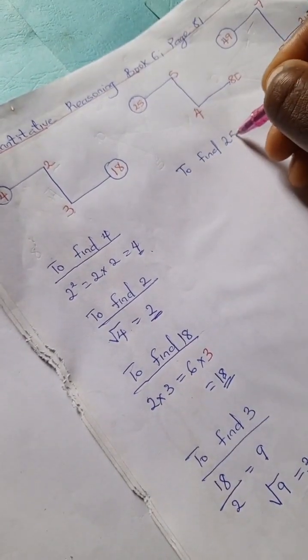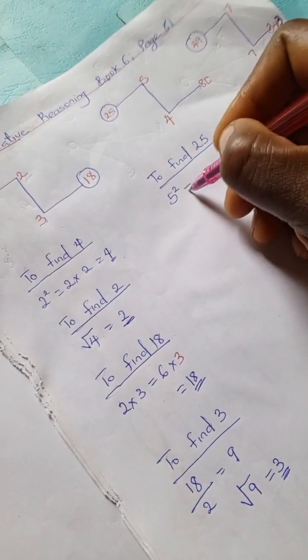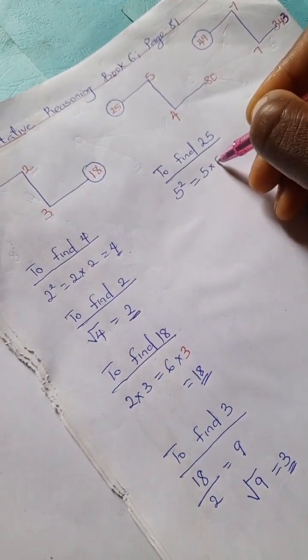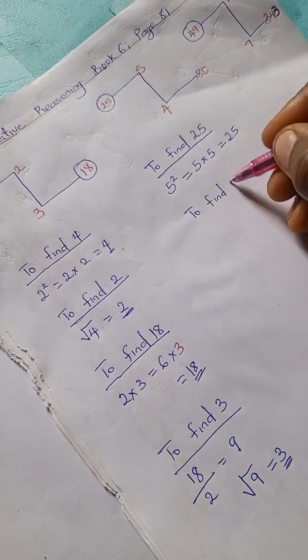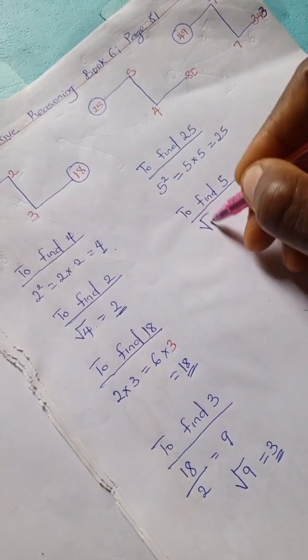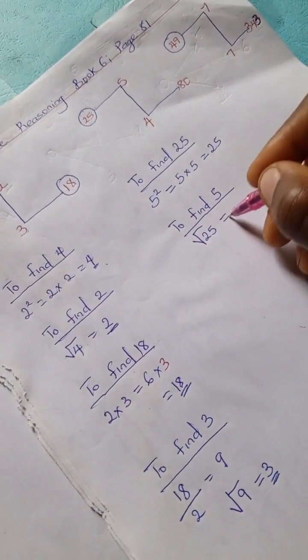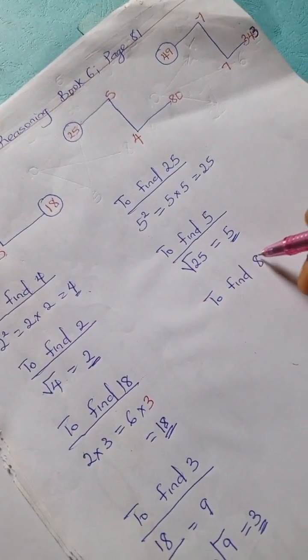To find 25, we're going to have 5 squared equals 5 times 5. To find 5, we're going to have square root of 25, which is equal to 5.